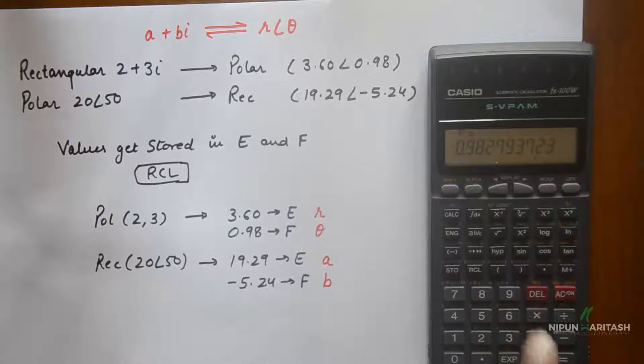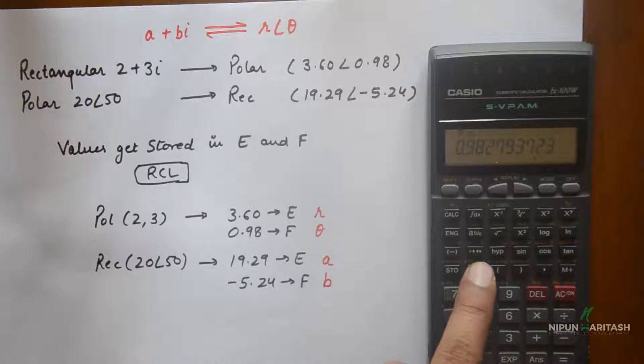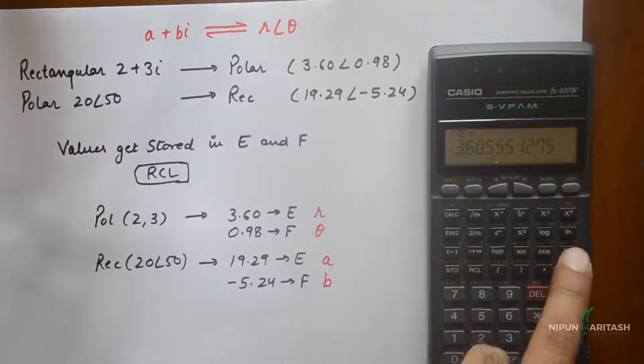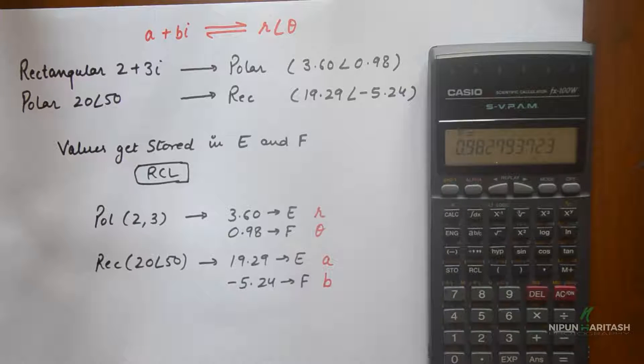And if you want to go back to R you can press RCL, which is 3.6, and you can switch back and forth. So this is one thing. The next part you can do is if you want to convert polar 20 angle 50 into rectangular, which will be 19.29 angle minus 5.24.